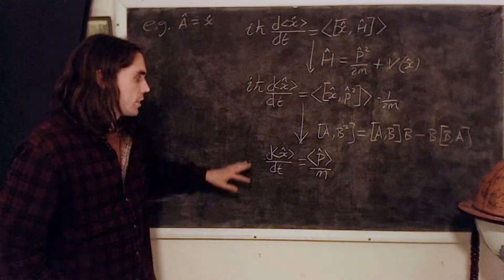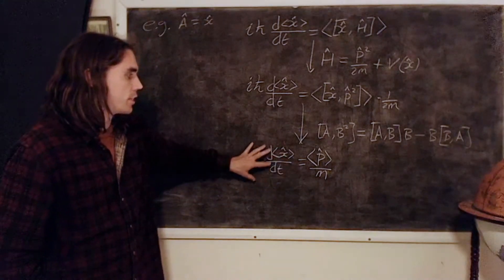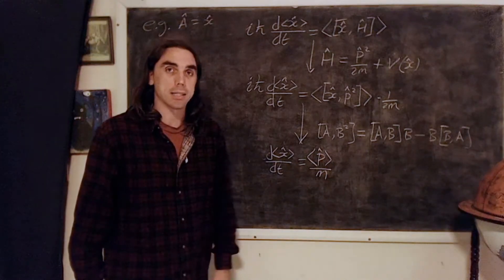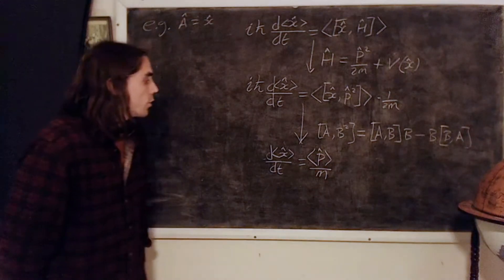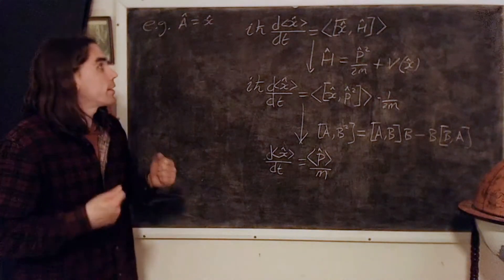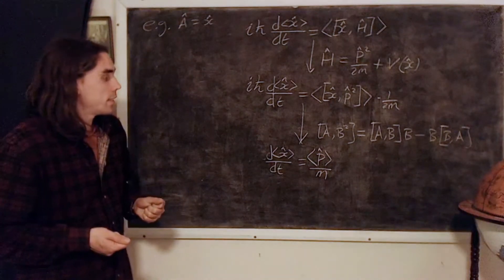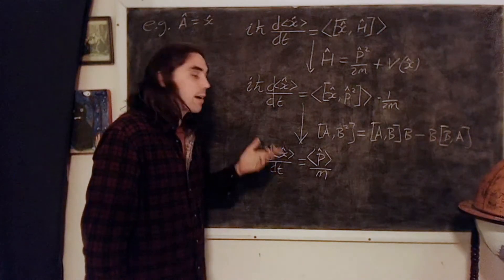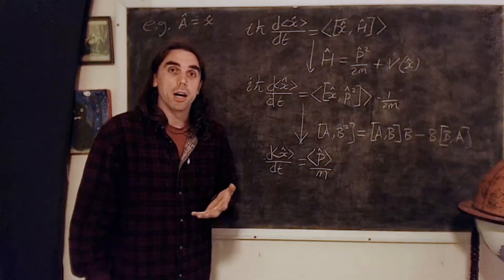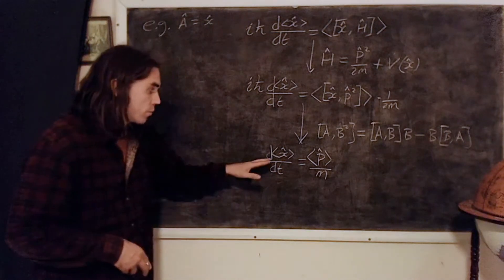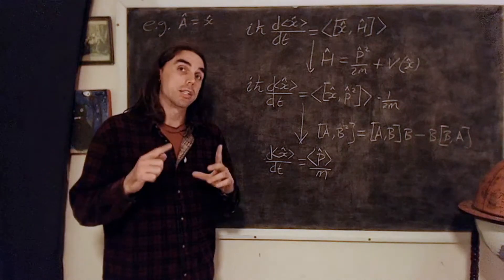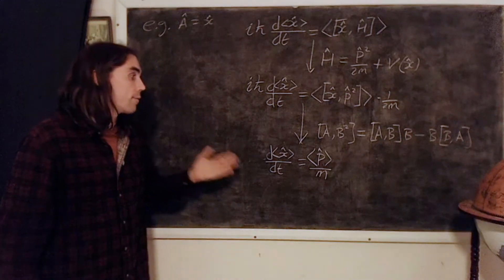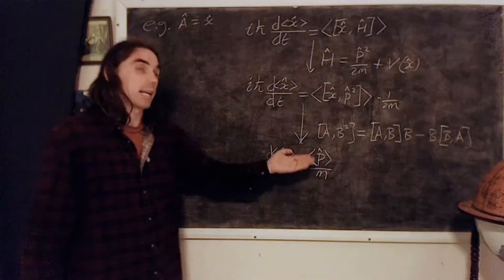But of course this is just the classical result — this just says that the velocity is equal to the momentum divided by the mass. So what Ehrenfest's theorem is showing us is that on average, where average means we take the expectation value of the quantum operators, on average we get back the classical result.